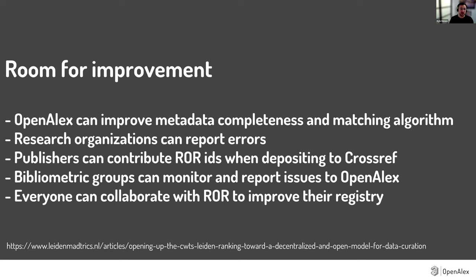They said research organizations can report errors, both to them and to us — we communicate quite a bit. Publishers can contribute ROR IDs when depositing to Crossref. One of the big challenges is that we get affiliation strings in a variety of shapes and forms, and then we have to match them to actual ROR IDs. I was just on the ROR community call last week and was really excited to hear from Springer Nature that they are moving in this direction and will be depositing ROR IDs when depositing records to Crossref. The benefit there is that we don't have to guess and make algorithms to match affiliation strings to ROR IDs — they'll be in the original record.